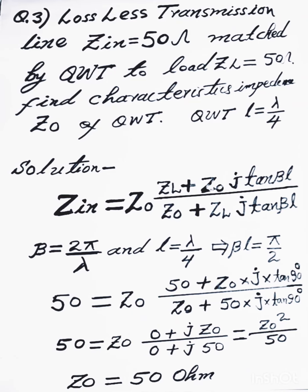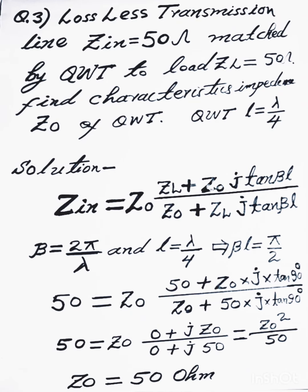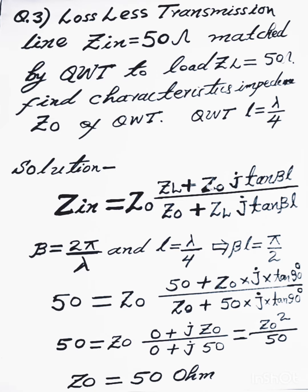Hello, question 3. Lossless transmission line input of the transmission line 50 ohm matched by QWT, quarter wave transformer, to load ZL 50 ohm. Find characteristics impedance Z0 of QWT, length L equal to lambda upon 4 of QWT.